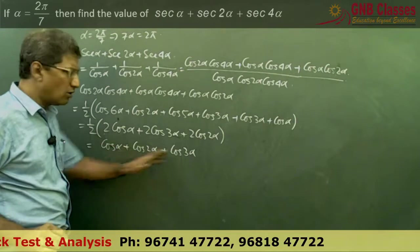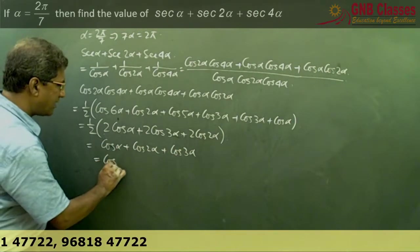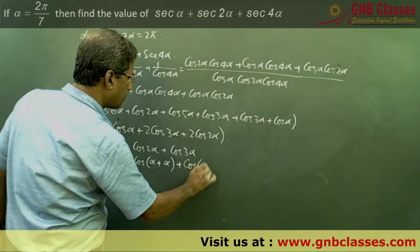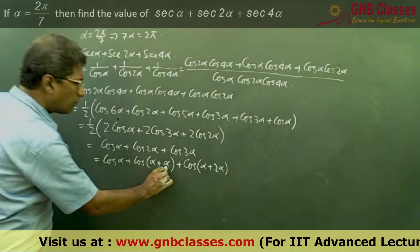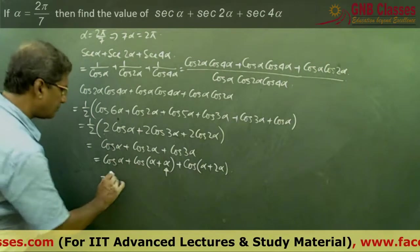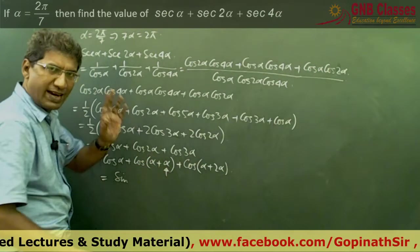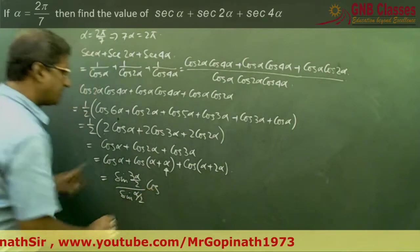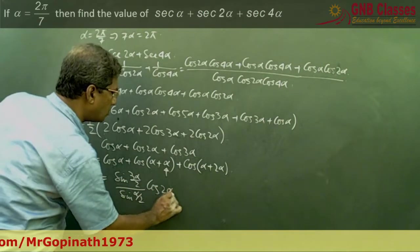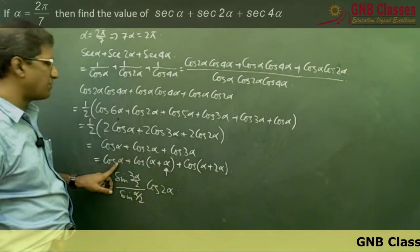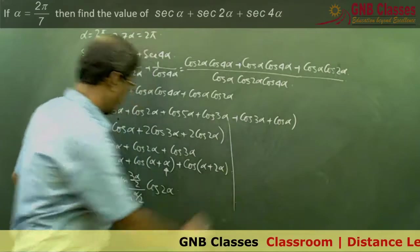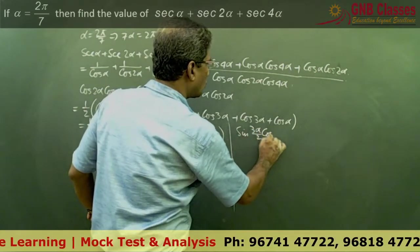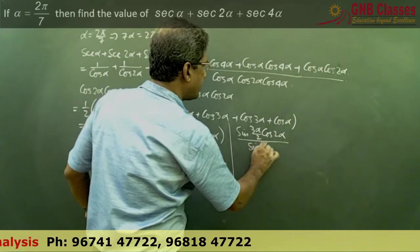This is a cosine series: cos α + cos(α + α) + cos(α + 2α). Here β = α, and there are n = 3 terms. Using the formula, this equals sin(nβ/2) / sin(β/2) · cos(first + last)/2 = sin(3α/2) / sin(α/2) · cos 2α. So the numerator becomes 2 · sin(3α/2) · cos 2α / sin(α/2). Is it clear?